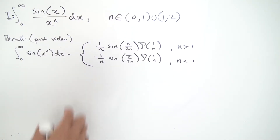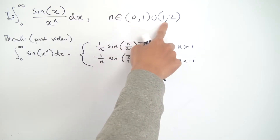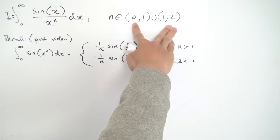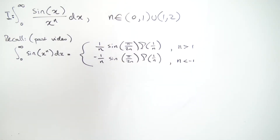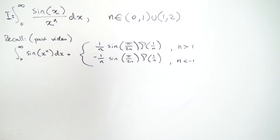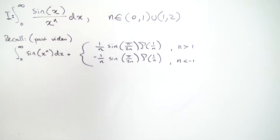Today we're going to be evaluating the integral from 0 to infinity of sin(x) over x^n dx, where n is between 0 and 1 or between 1 and 2 — so the open interval (0,2) excluding 1. This integral is more or less a variation on the Dirichlet integral; we just have this extra n in the exponent.